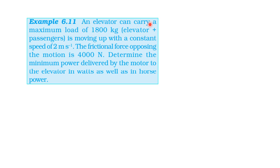An elevator can carry a maximum load of 1800 kg. The elevator plus passenger mass is 1800 kg, moving up with a constant speed of 2 m per second. The frictional force opposing the motion is 4000 N. Determine the minimum power delivered by the motor to the elevator in watts as well as in horsepower.